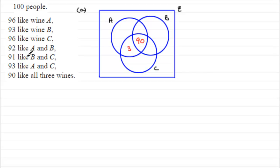What's next? 91 like B and C. So that covers those two regions, which leaves us with just one person liking B and C but not A. Then 92 like A and B — we've got 90 there, so that leaves us with two liking A and B but not C. And then 96 like wine C. We've already got 94 across those three regions, so that leaves us with two liking C only.